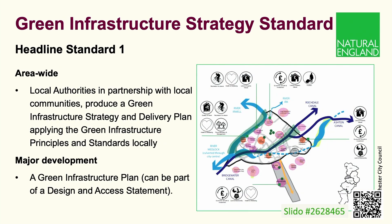The green infrastructure strategy standard supports the national planning policy framework's policy that local planning authorities should develop strategic policies for green infrastructure in their development plans. At an area-wide scale, local authorities in partnership with their communities should produce a green infrastructure strategy — or its equivalent — and a delivery plan that applies the green infrastructure principles and standards locally. These strategies set out how green infrastructure will help create greener neighbourhoods with a thriving nature network, reducing air and water pollution, supporting sustainable drainage, and helping places adapt to climate change. Major developments should have a green infrastructure plan.